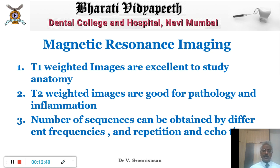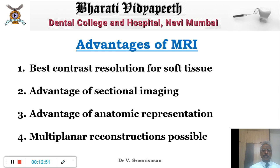There are a number of sequences with different frequencies, different repetition and echo times, which help produce different kinds of MRI images. The advantages of MRI include fantastic contrast resolution for soft tissue. It has the advantages of sectional imaging with no superimposition — these are reformatted images. You have anatomic representation and multi-planar capability: like CBCT, it can be reconstructed in any plane that you want.